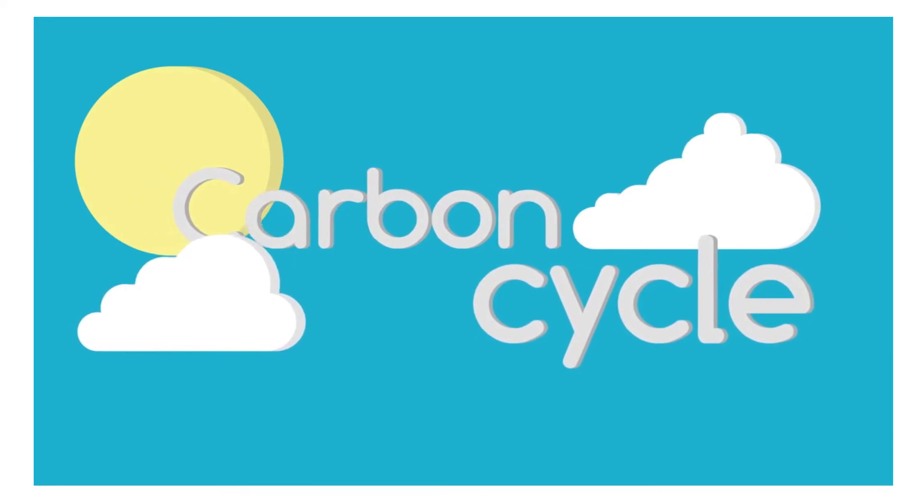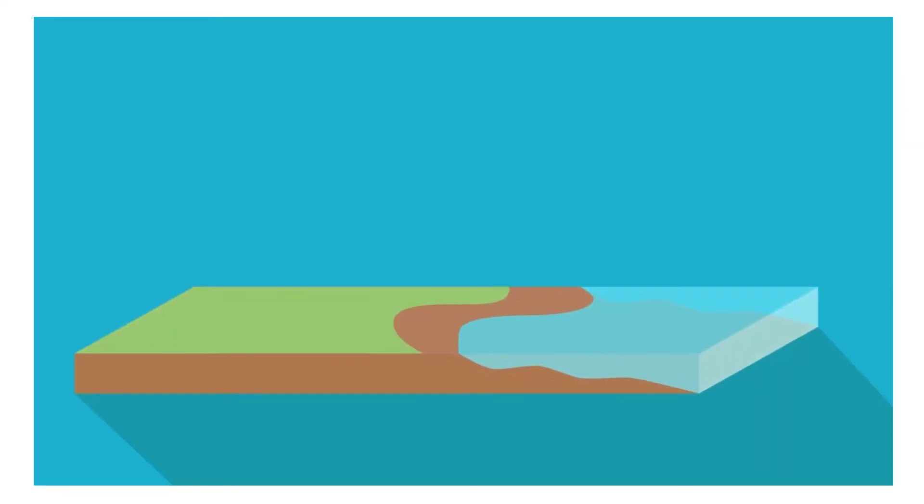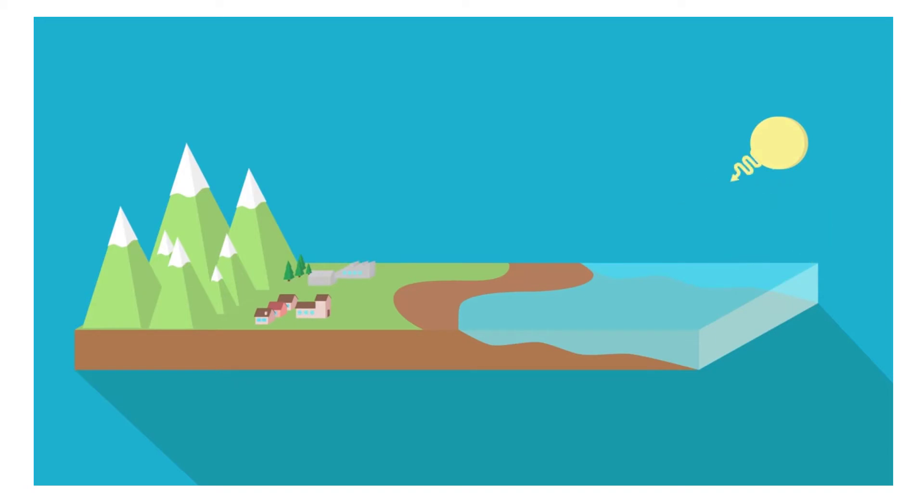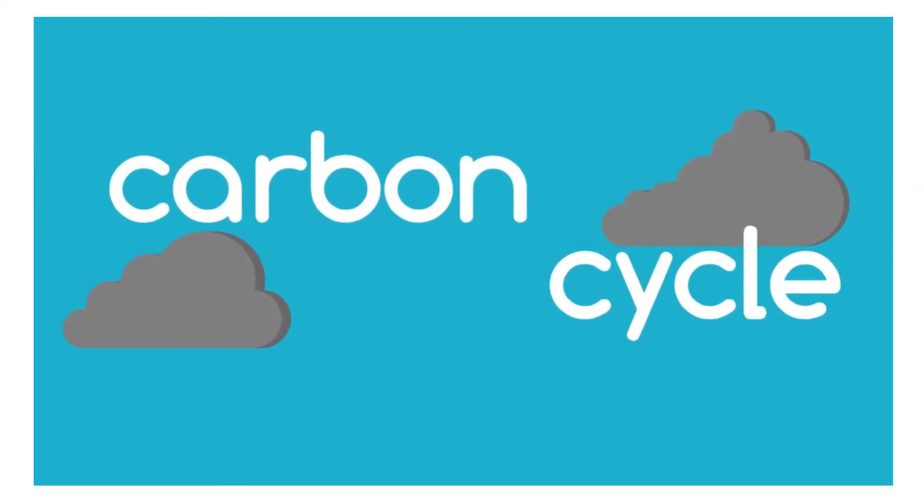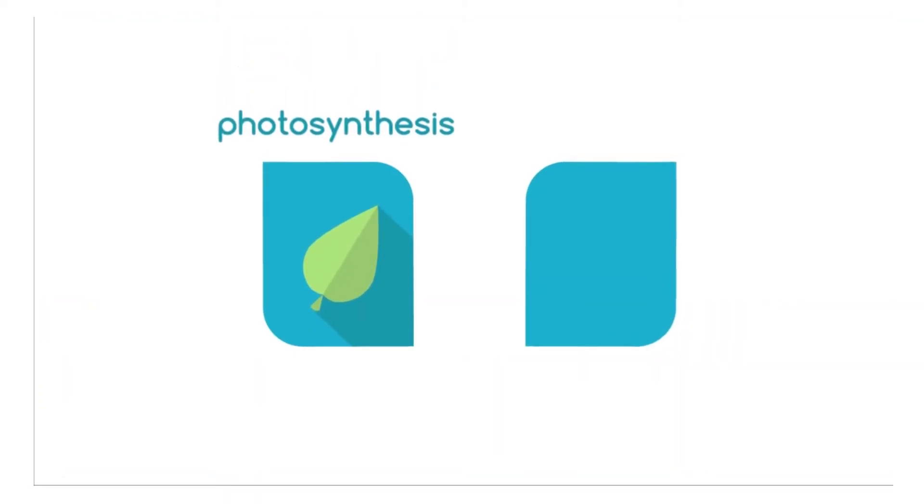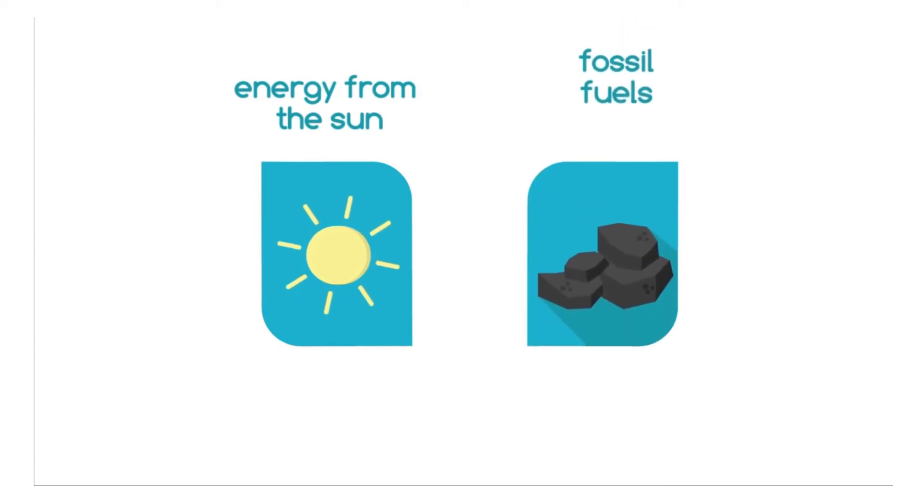The carbon cycle. All elements and some compounds have their natural cycle in nature. For example, the water cycle. Matter is cycled using energy usually from the sun. And in this video we'll be considering the carbon cycle. We will see how photosynthesis and respiration help carbon to be cycled in nature. Again using energy from the sun. And we will also see the part played by mankind when we use fossil fuels.